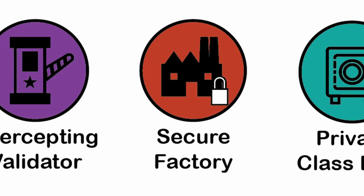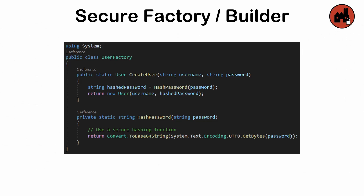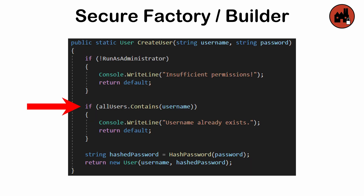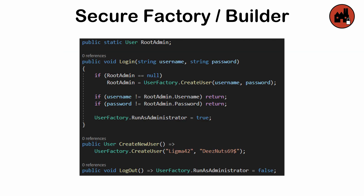The secure factory and secure builder patterns are an extension of creation patterns like factory or builder where sensitive information must be protected during object creation. For instance, a secure factory might validate inputs, encrypt outputs, or restrict access based on user roles. This ensures that sensitive data like API keys, passwords, or configurations are handled discreetly.